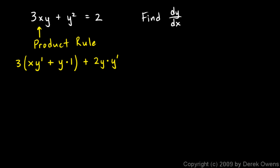Remember, we're thinking of y as a function of x implicitly. So y here is our inner function and the squaring of y is the outer function — we have a function within a function, so we use the chain rule. The derivative with the power rule is just 2 times y to the first, and then times y prime. That's going to equal the derivative of the right side, and the derivative of a constant is just 0.